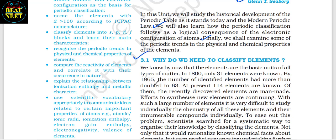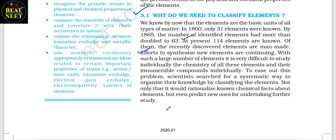3.1 Why do we need to classify elements? We know that elements are the basic units of all types of matter. In 1800, only 31 elements were known; by 1865, the number had more than doubled to 63. At present, 114 elements are known, and efforts to synthesize new elements are continuing. With such a large number of elements, it is very difficult to study the chemistry of all these elements and their innumerable compounds individually. To ease this problem, scientists searched for a systematic way to organize knowledge by classifying the elements — not only to rationalize known chemical facts but also to predict new ones.